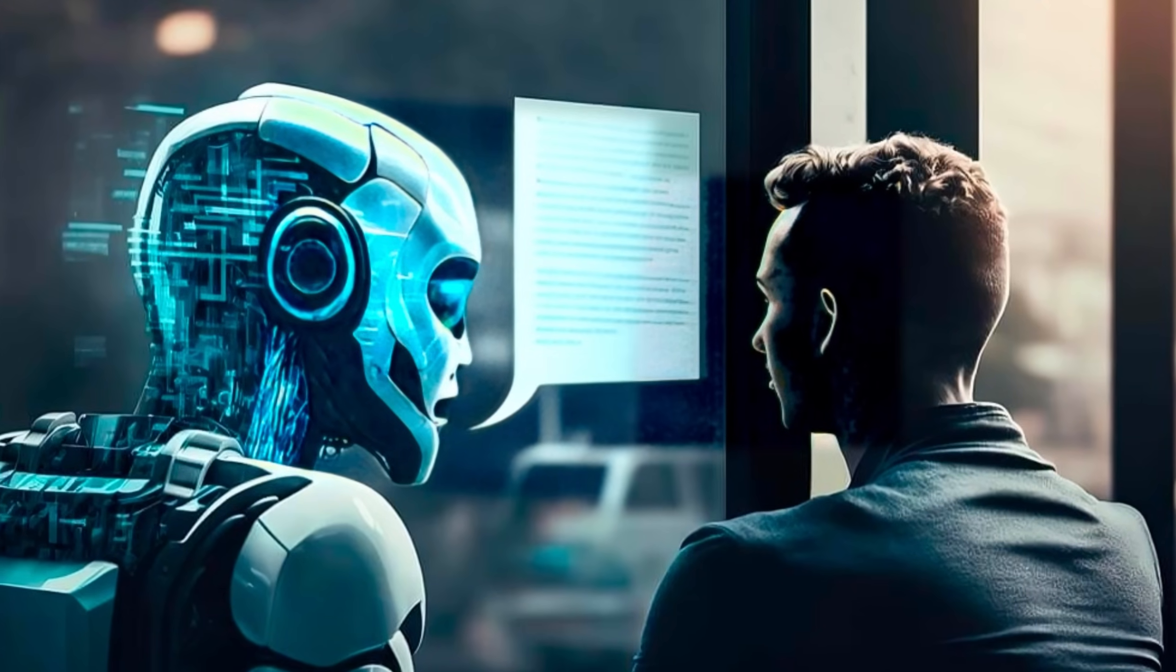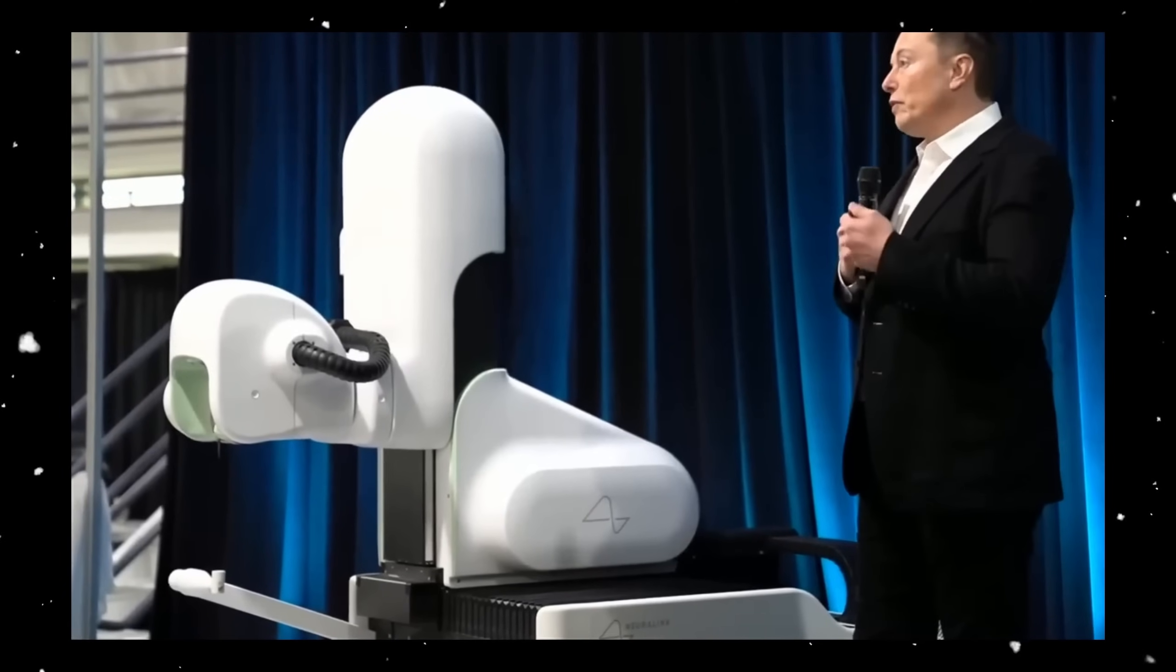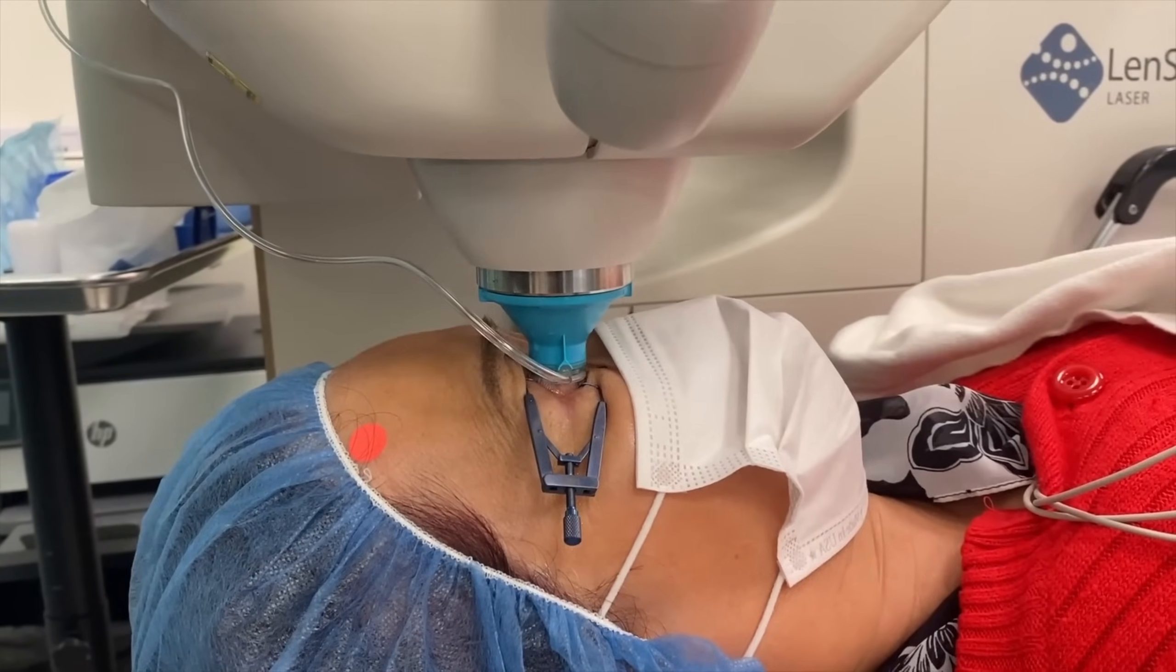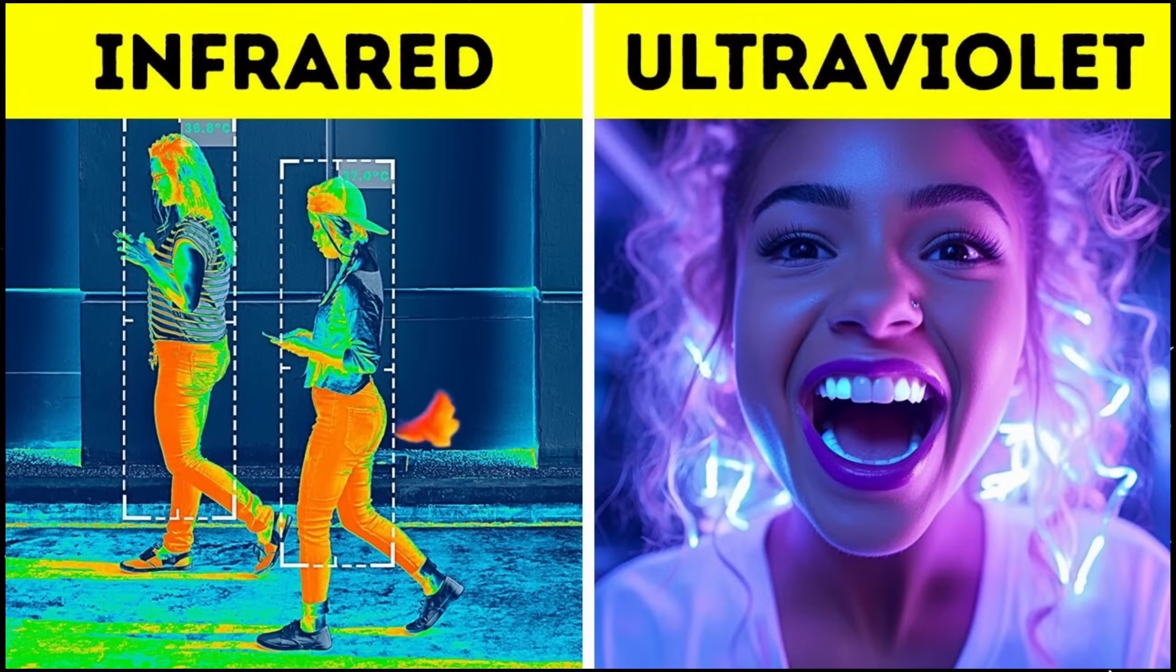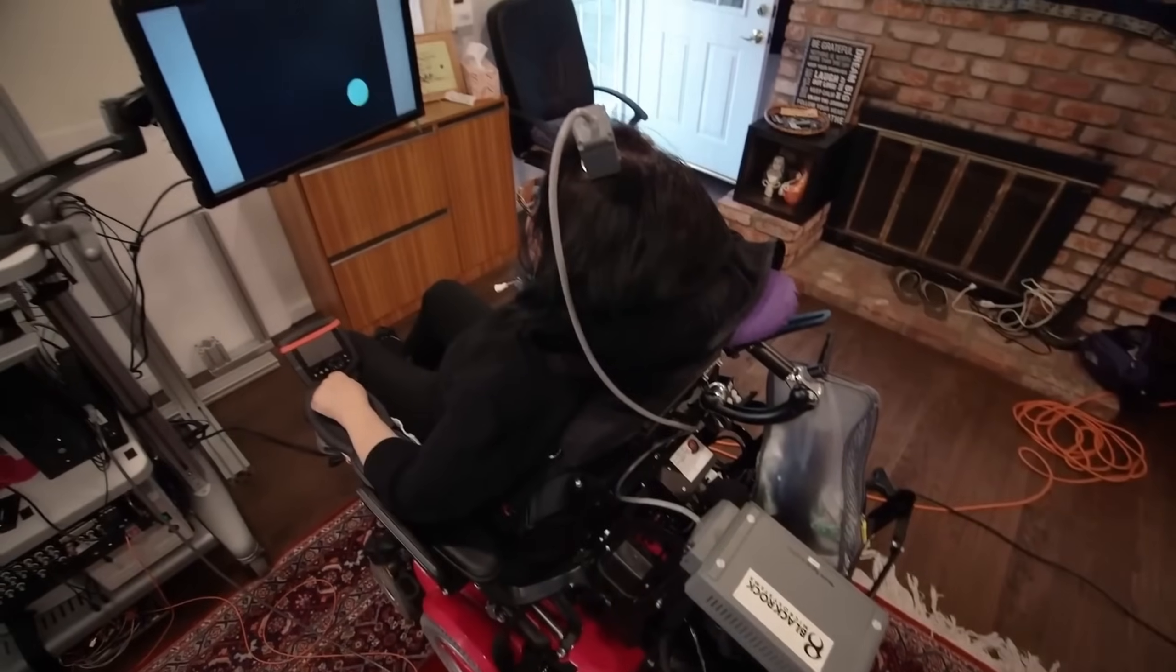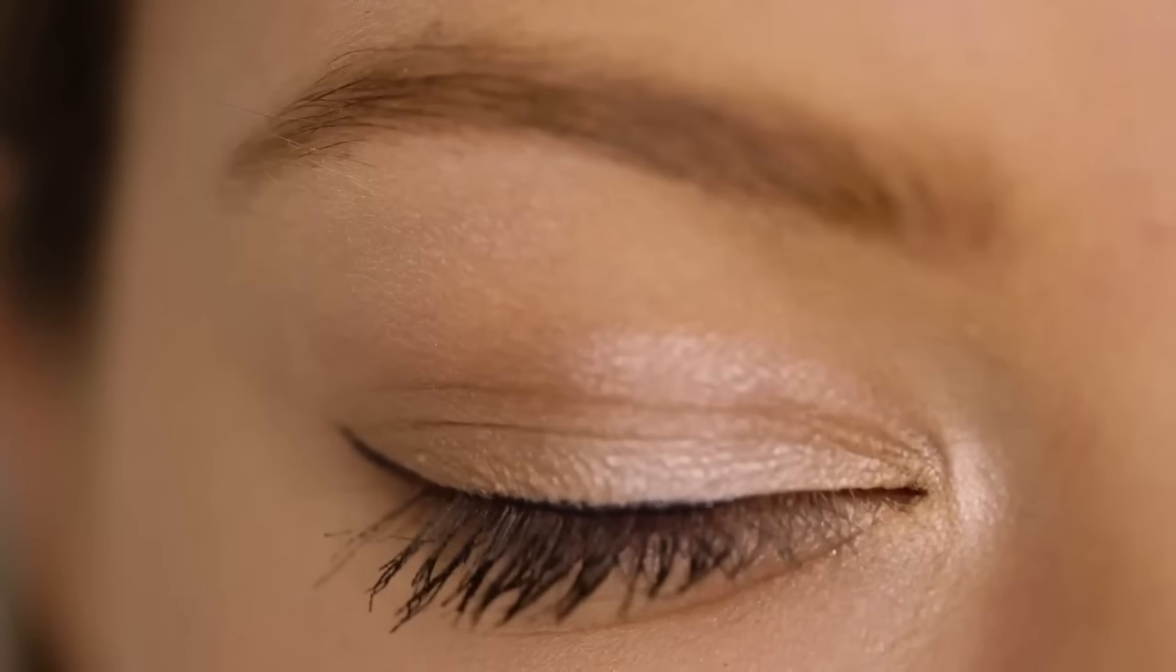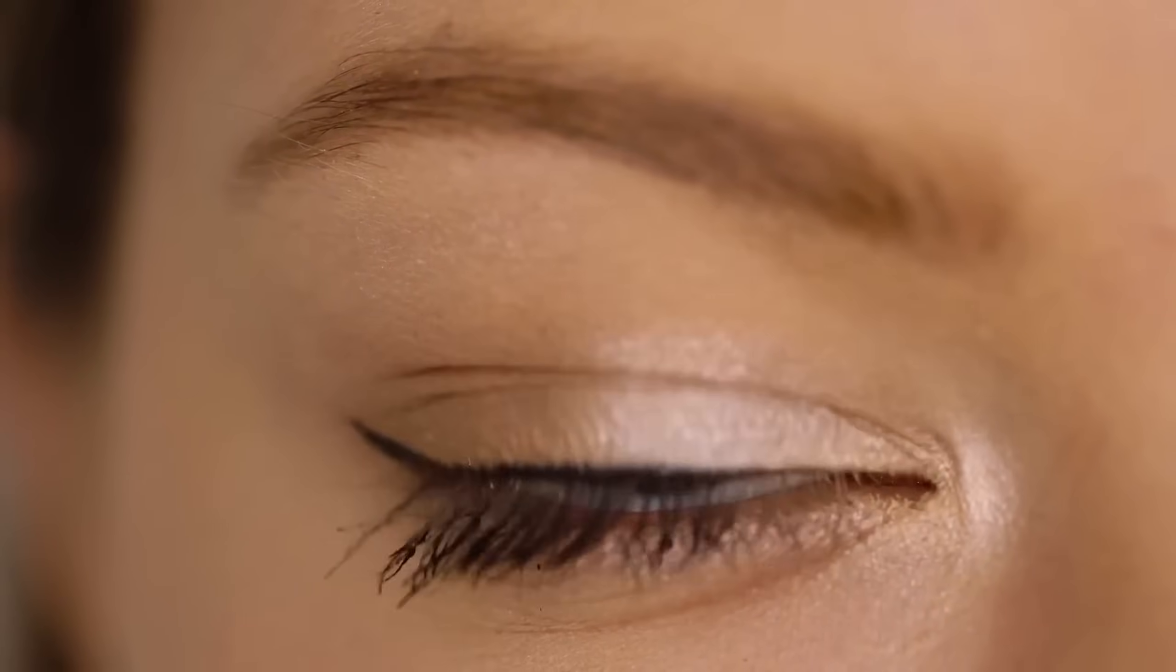Elon Musk thinks Neuralink brain chips are the best way for humans to keep up with advanced AI in the future. He imagines that one day, using Neuralink might let someone see in ways we can't now, like seeing different types of light like ultraviolet or infrared. Musk also said Neuralink could help fix damaged nerves, help people with seizures, and improve memory. He wants the chip not just to fix problems, but to make people's natural abilities even better.